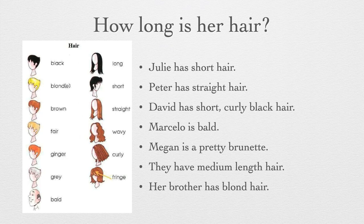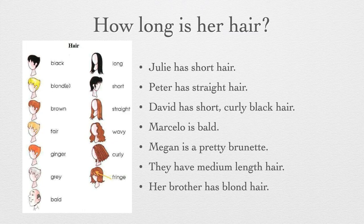Não vamos falar apenas sobre o tamanho, o comprimento do cabelo. Billy has short hair — ela tem cabelo curto. Peter has straight hair — straight, liso. David has short, curly, black hair. Pra vocês terem uma noção da ordem dos adjetivos que vocês podem usar. Marcelo is bald — he is bald. Bald, careca.